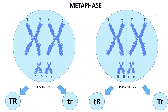So, allele T will not always end up with R during gametogenesis, and neither will small t with small r, like in the first possibility. Because there is also possibility number 2, giving rise to four types of gametes.